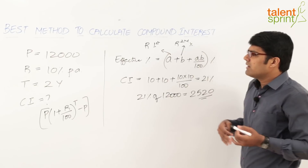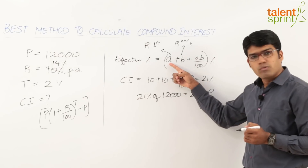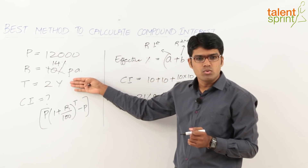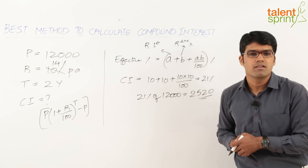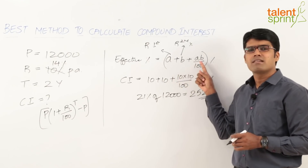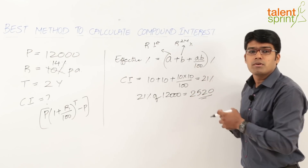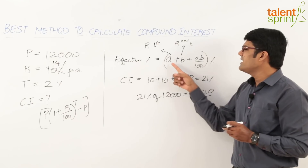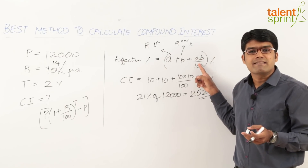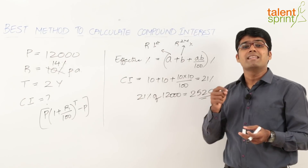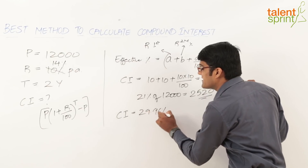Now let's say the rate of interest is 14% per annum. Then a = 14 and b = 14, since the time period is 2 years. So we calculate: 14 + 14 + (14×14)/100 = 28 + 196/100 = 28 + 1.96 = 29.96%. This is all mental calculation — no need to put pen to paper.